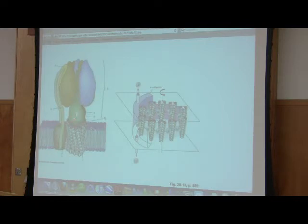This guy turns and what it causes is this little stalk right here to spin inside of these six big subunits up here. The spinning of this little stalk in the middle is part of the process of making the ATP.